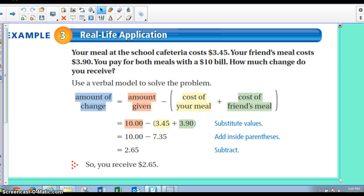All right, let's take a look at example 3, which is a real-life situation for adding and subtracting decimals. Your meal at the school cafeteria costs $3.45. Your friend's meal costs $3.90. You pay for both meals with a $10 bill. How much change do you receive?